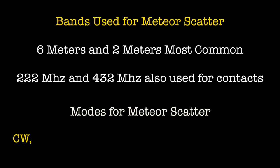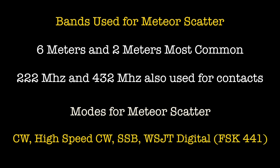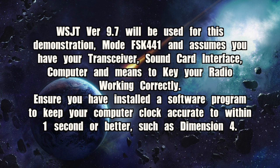The following bands and modes are used for meteor scatter. WSJT version 9.7 will be used for this demonstration, mode FSK441, and assumes you have your transceiver, sound card interface, computer, and means to key your radio working correctly.